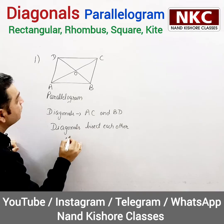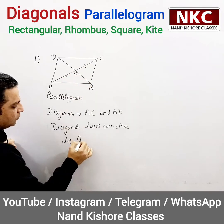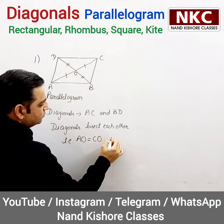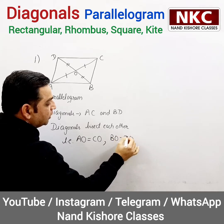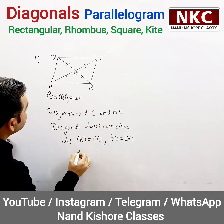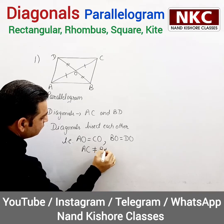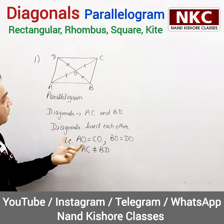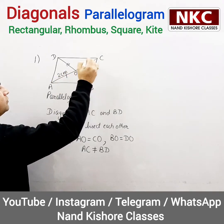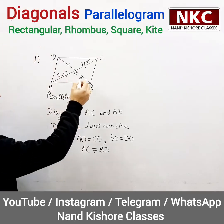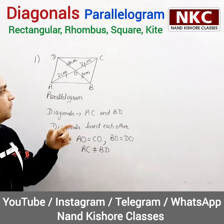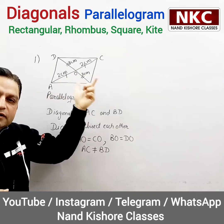It means that AO and CO are equal, and BO and DO are equal. But do remember, in a parallelogram, diagonals are not equal — AC is not equal to BD. For example, if AO is 2 cm then CO is also 2 cm, and if BO is 3 cm then DO is also 3 cm. So one diagonal length is 4 cm and the second is 6 cm.